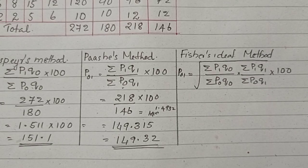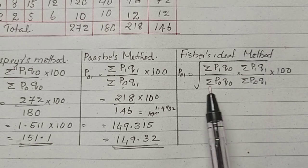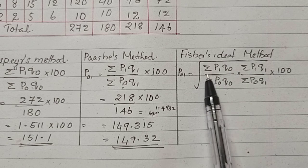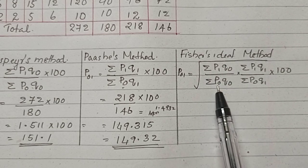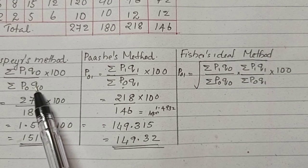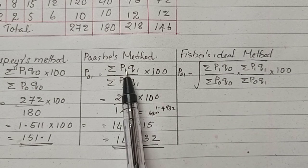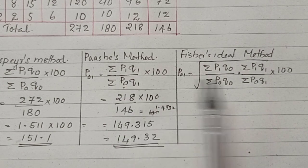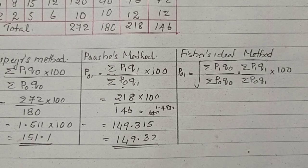Next method is Fisher's ideal method. In this method, we have to find the square root of sigma P1 Q0 divided by P0 Q0 into P1 Q1 divided by P0 Q1 into 100.